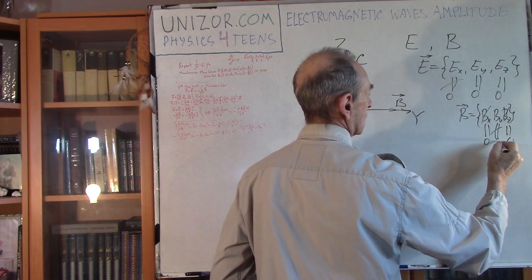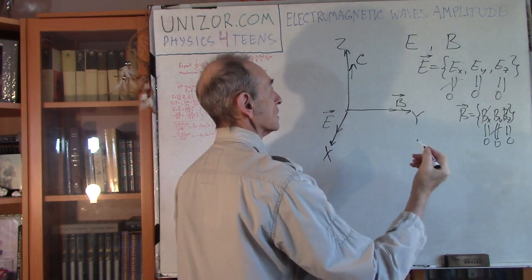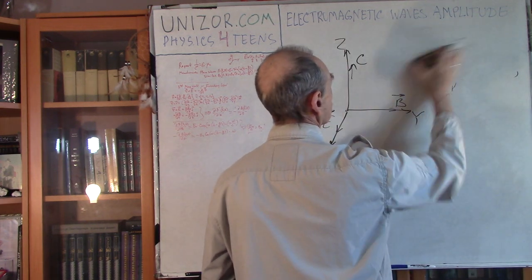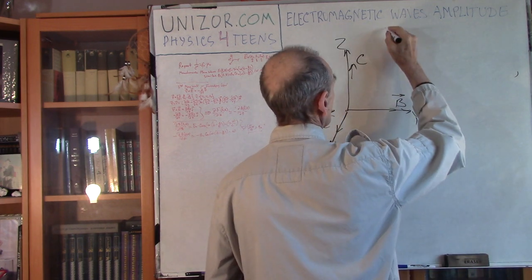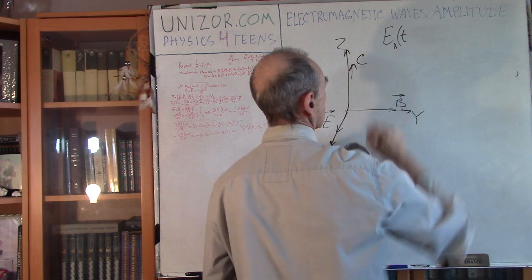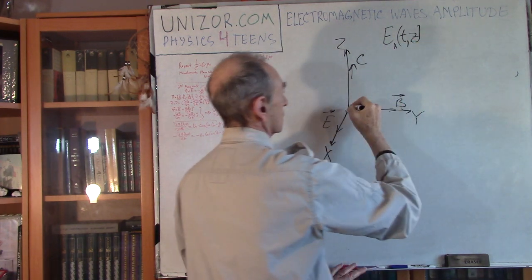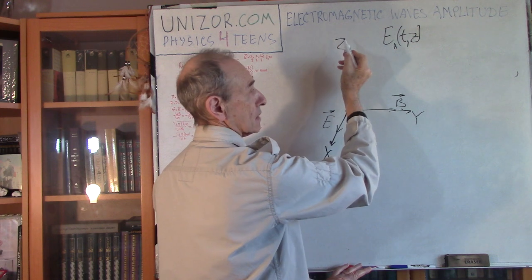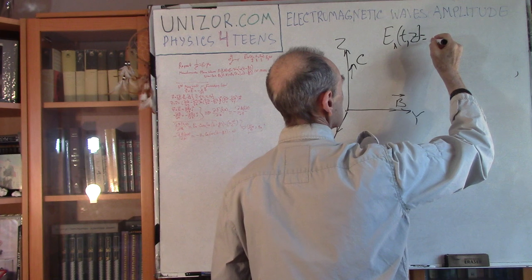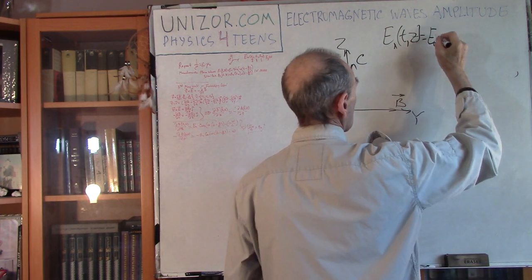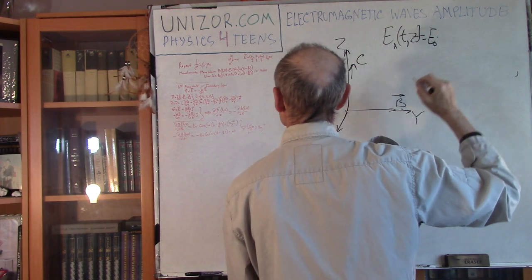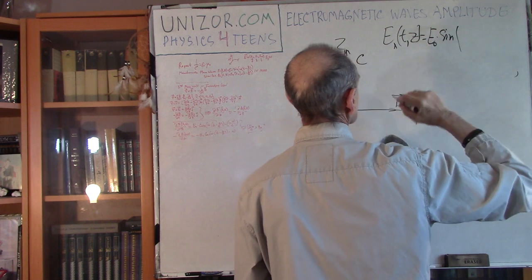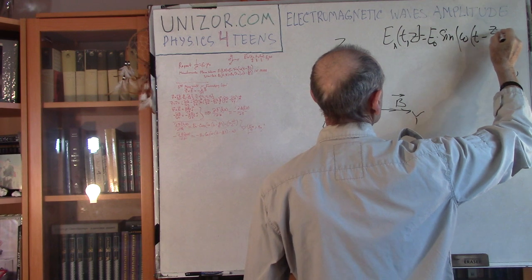The analytical expression for Ex depends on time and location along the z-axis. So it's equal to some amplitude E0, and then sine of omega t minus z divided by c.